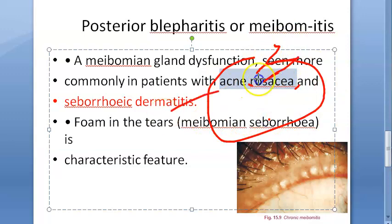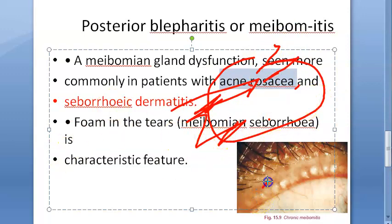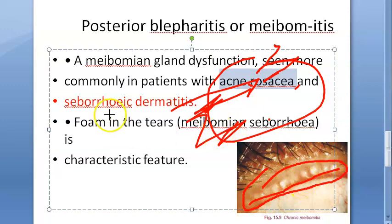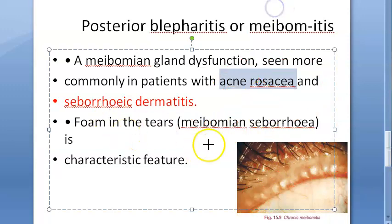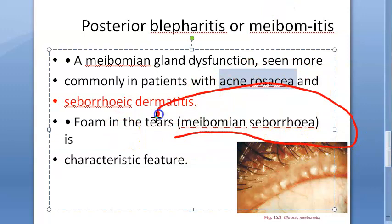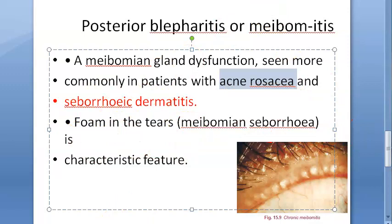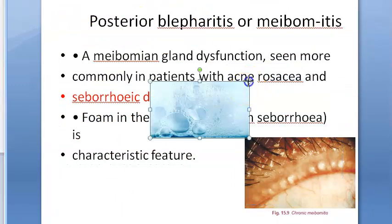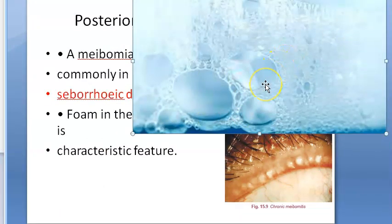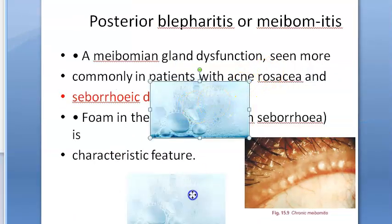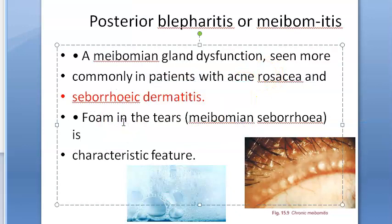People with acne rosacea and seborrheic dermatitis — these are skin issues — develop meibomian gland dysfunction. You can clearly see the meibomian gland outlets here; some secretion clogging is happening. As a result, there will be foam in the tears. Foam in the tears is a characteristic feature of meibomitis.